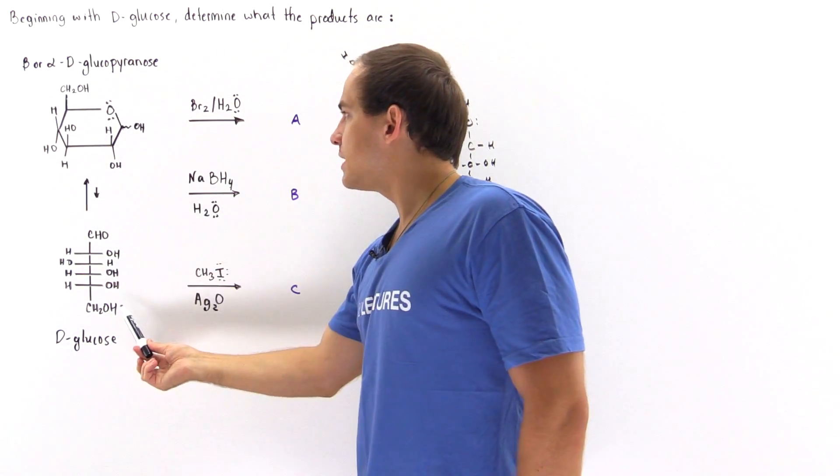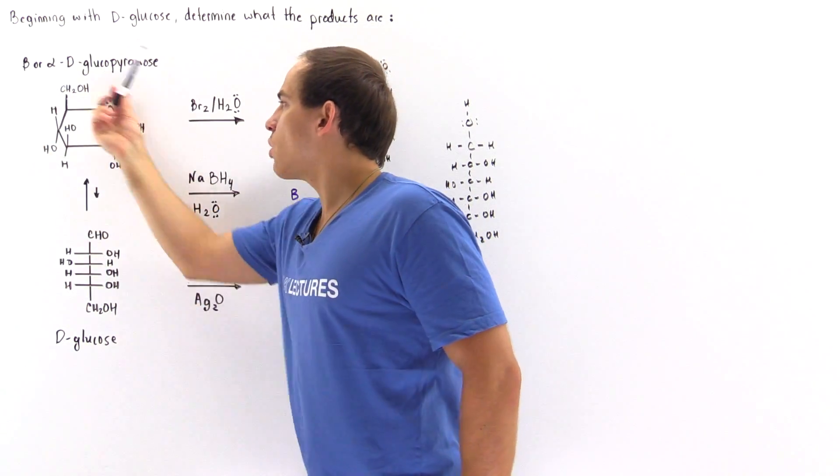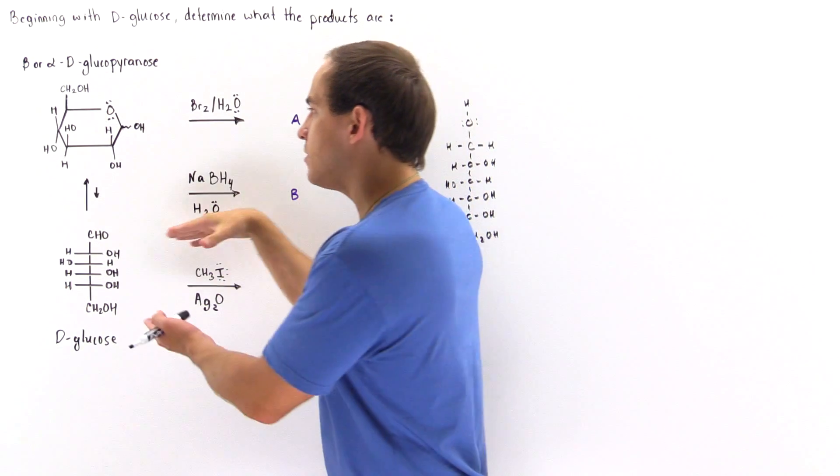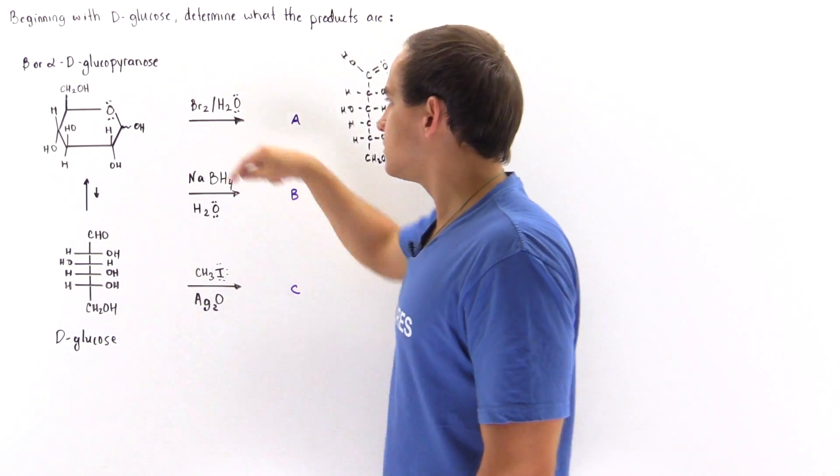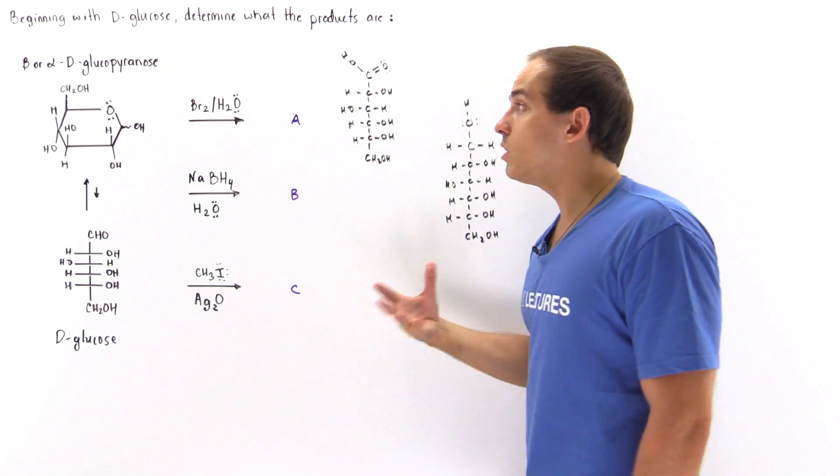Now notice it's this section that will react and not this one. This is the one that predominates, so we're going to have much more of this at equilibrium than this. And so that means all of these open OH groups will be replaced—will be methylated.